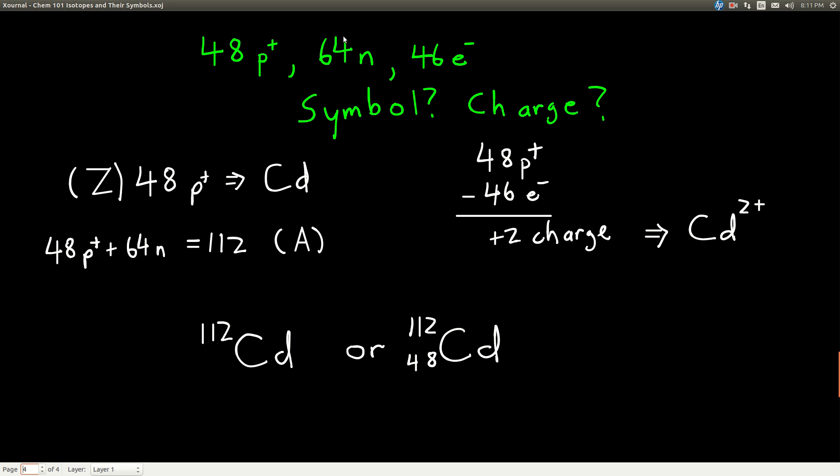Let's say we know an atom has 48 protons, 64 neutrons, and 46 electrons. What's its symbol? What's its charge? First of all, knowing that there's 48 protons, we can look up on the periodic table and see that the element with 48 protons is cadmium.